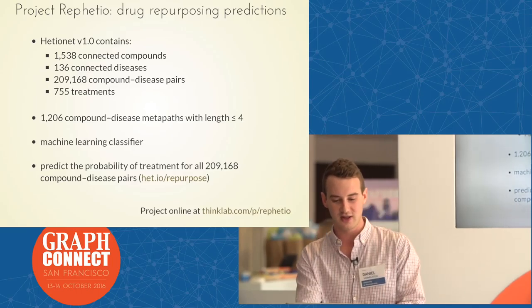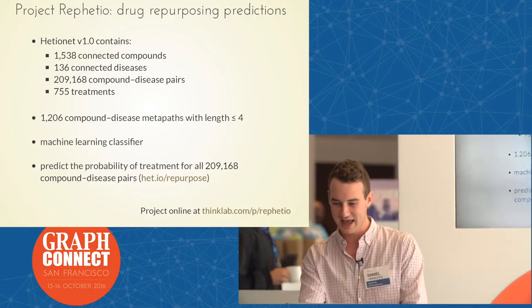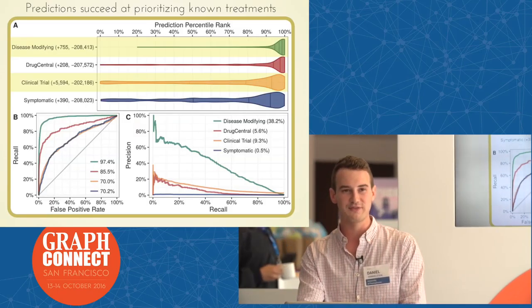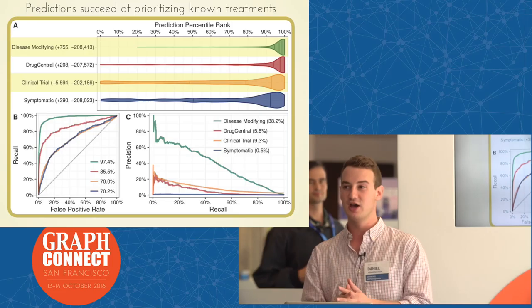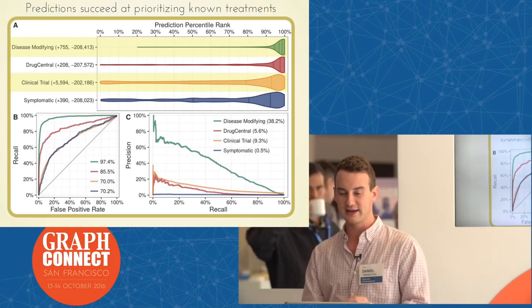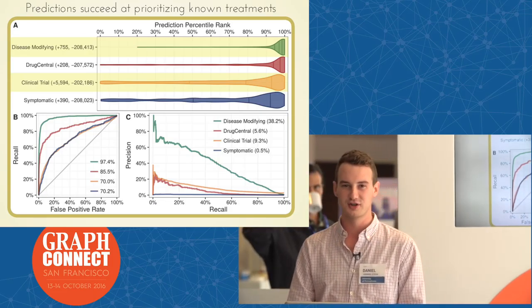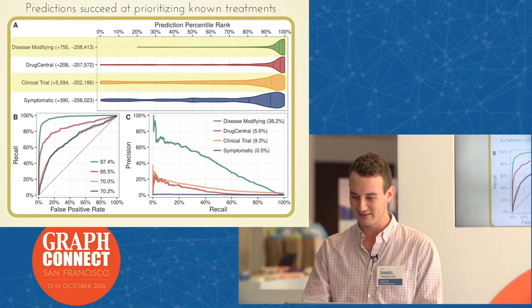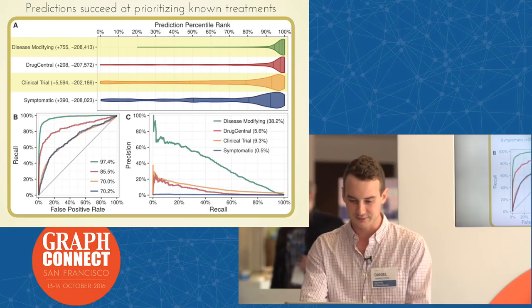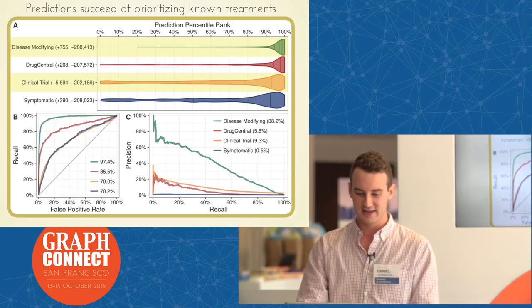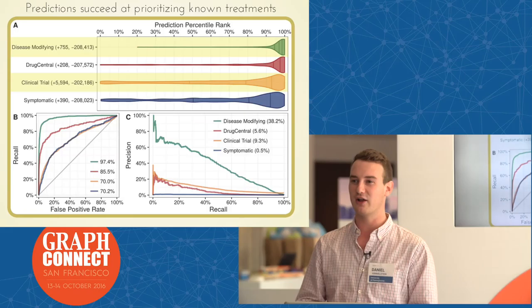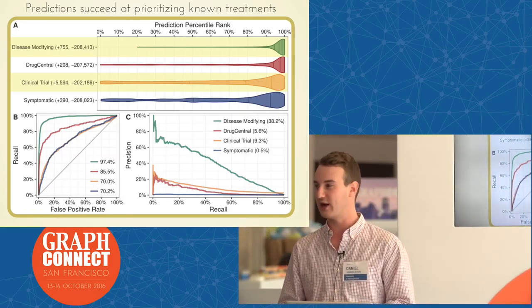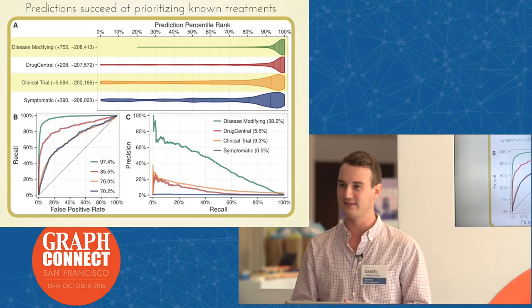These predictions are online at het.io/repurpose and you're free to use them. What we found is that those 755 known treatments were ranked very highly by our approach, as you can see by how heavily weighted this violin plot is in the high percentiles. Even more interesting is that drugs in clinical trial — the drugs of tomorrow and potentially future treatments — we were also able to prioritize them highly based on our predictions.